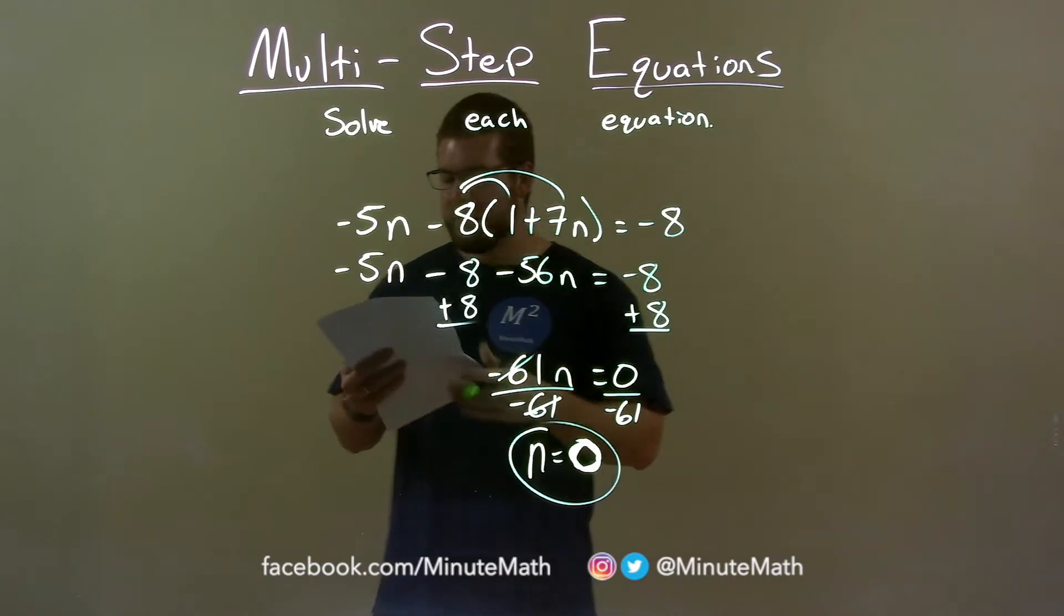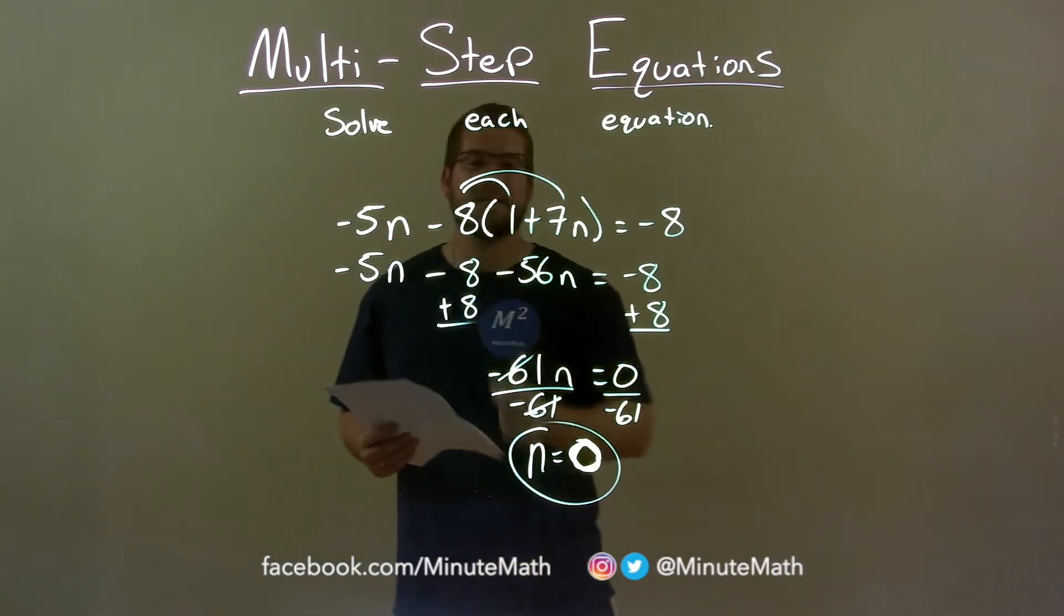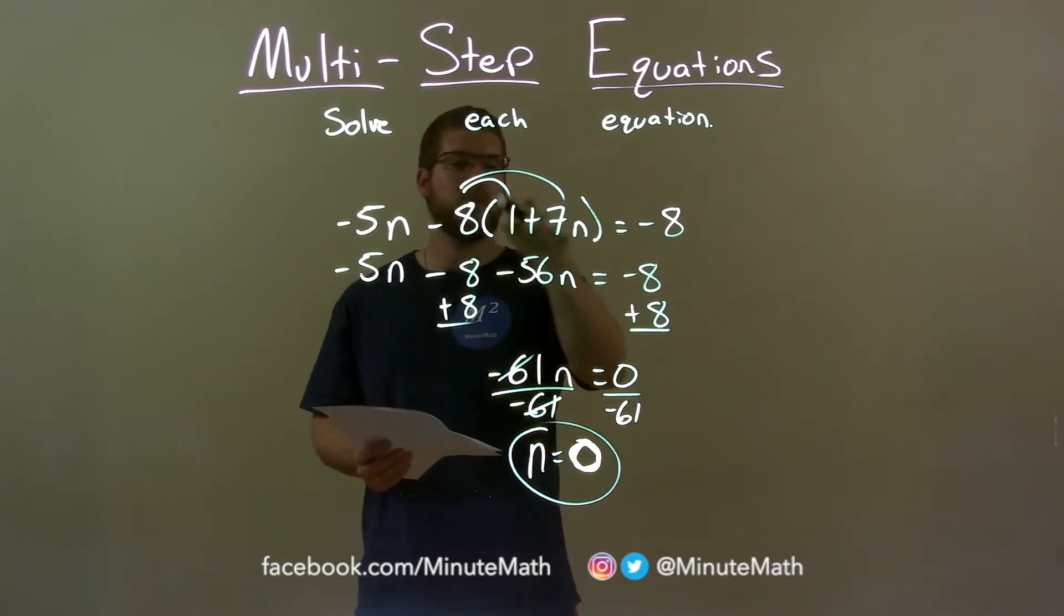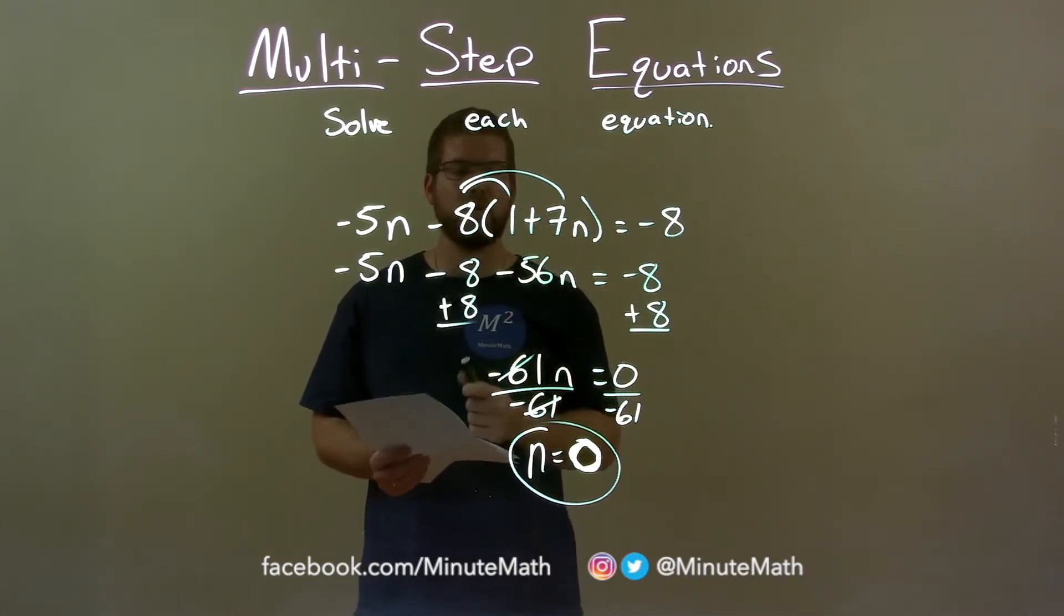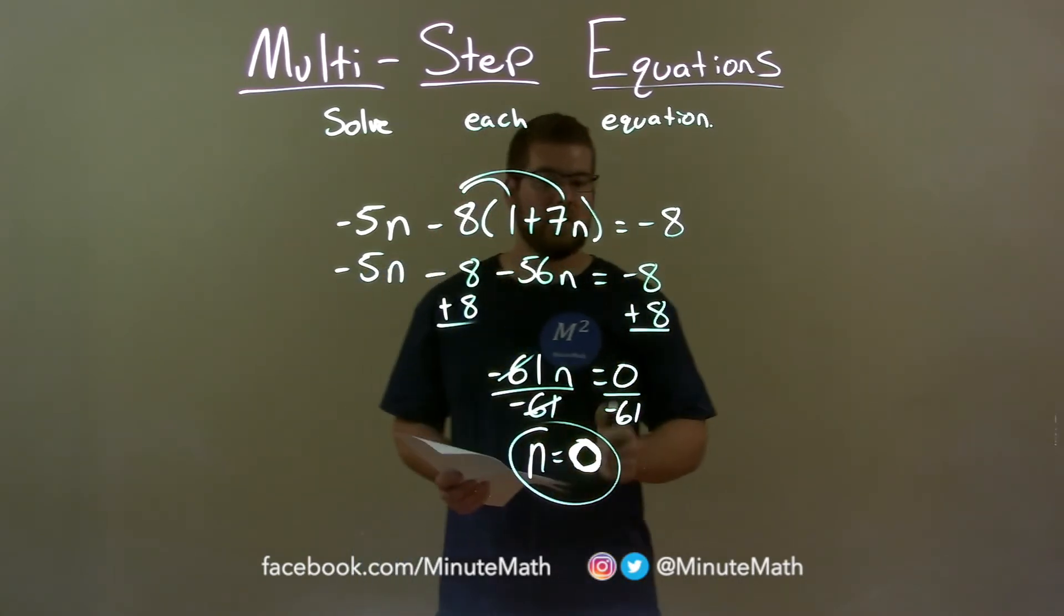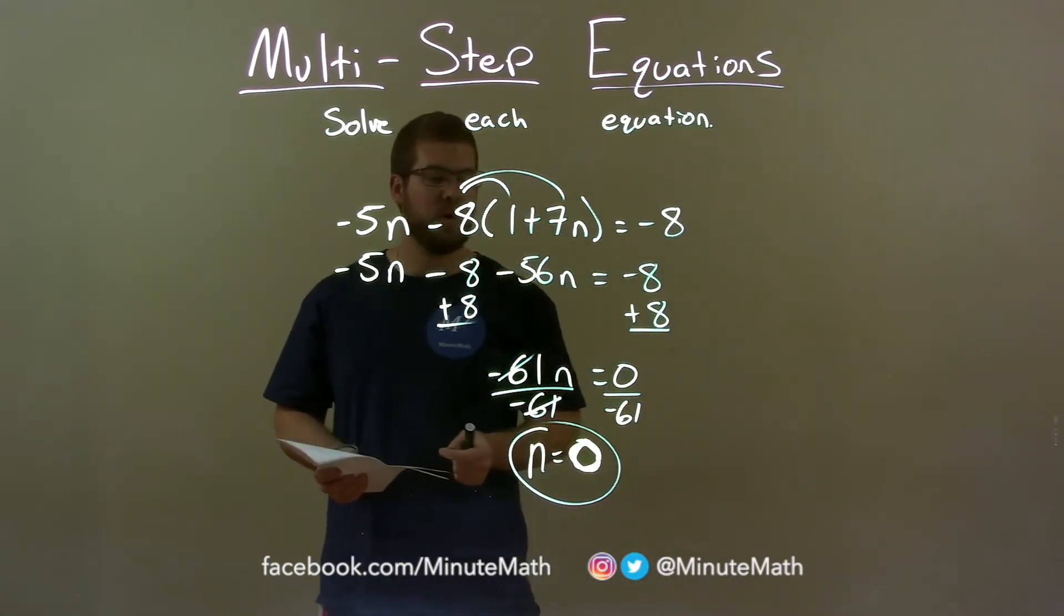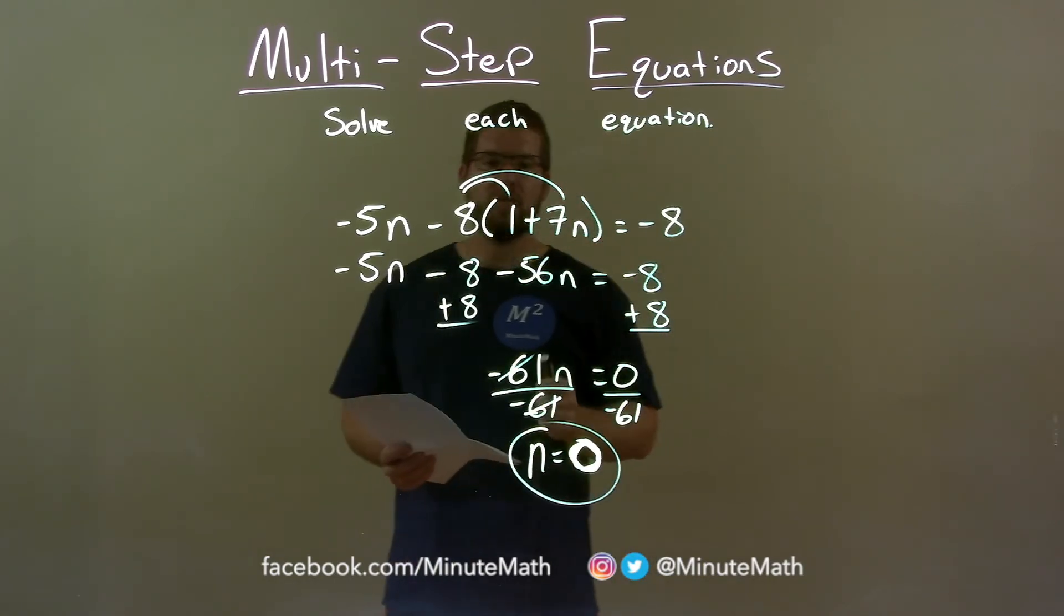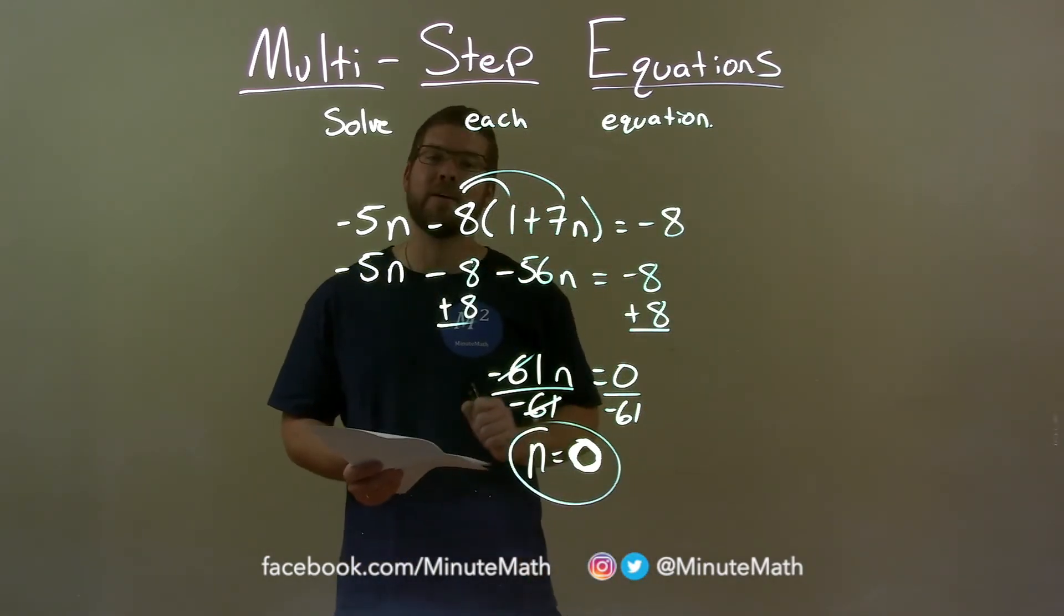Quick recap. We're given negative 5n minus 8 times 1 plus 7n equals negative 8 and we just solve for n. Distribute the negative 8 essentially to both parts in the parentheses. Then I combine my like terms. Negative 61n equals 0. Divide both sides by negative 61. And remember, 0 divided by any number is 0. Final answer, n equals awkward looking 0.